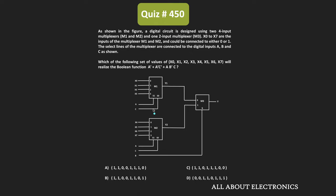So with the help of these multiplexers, we want to realize a specific Boolean function. To implement this Boolean function, we have been asked to find the values of x0 to x7.